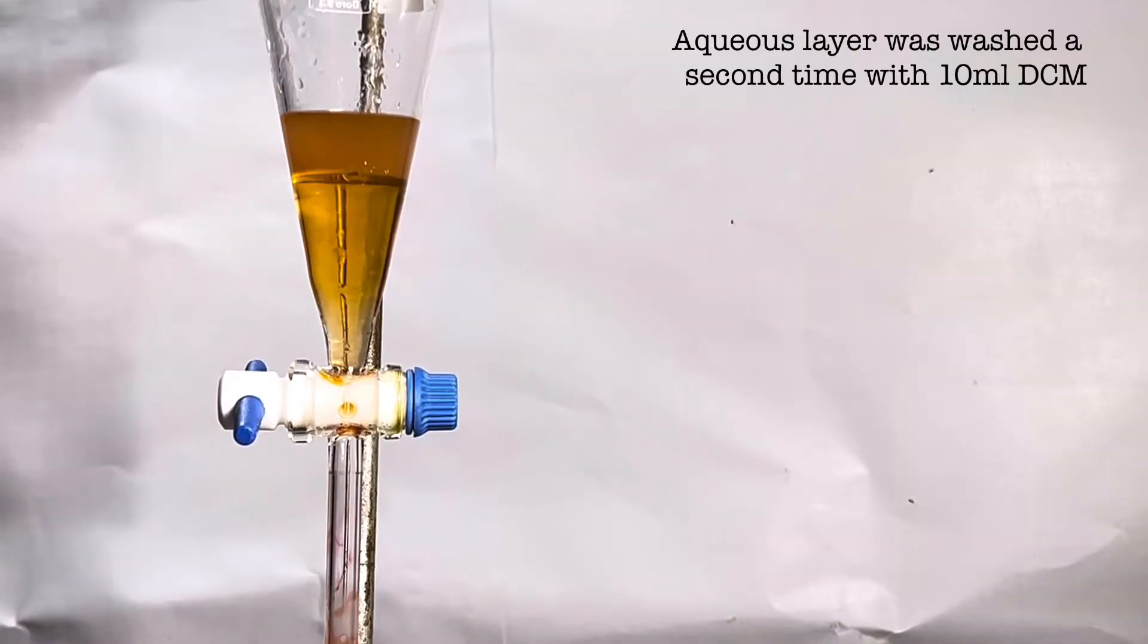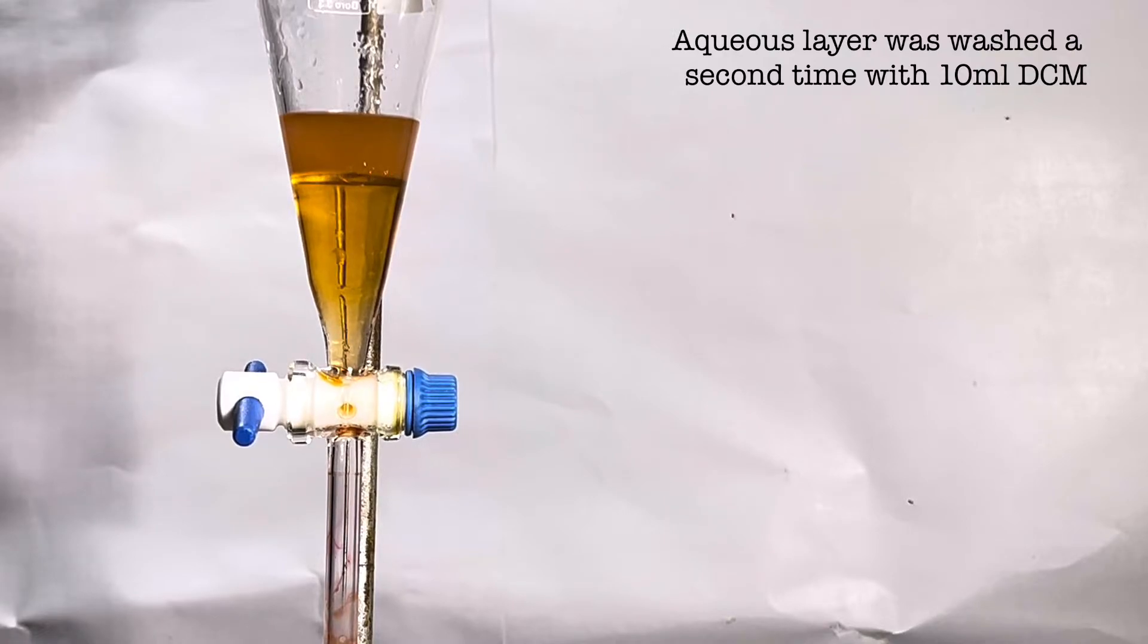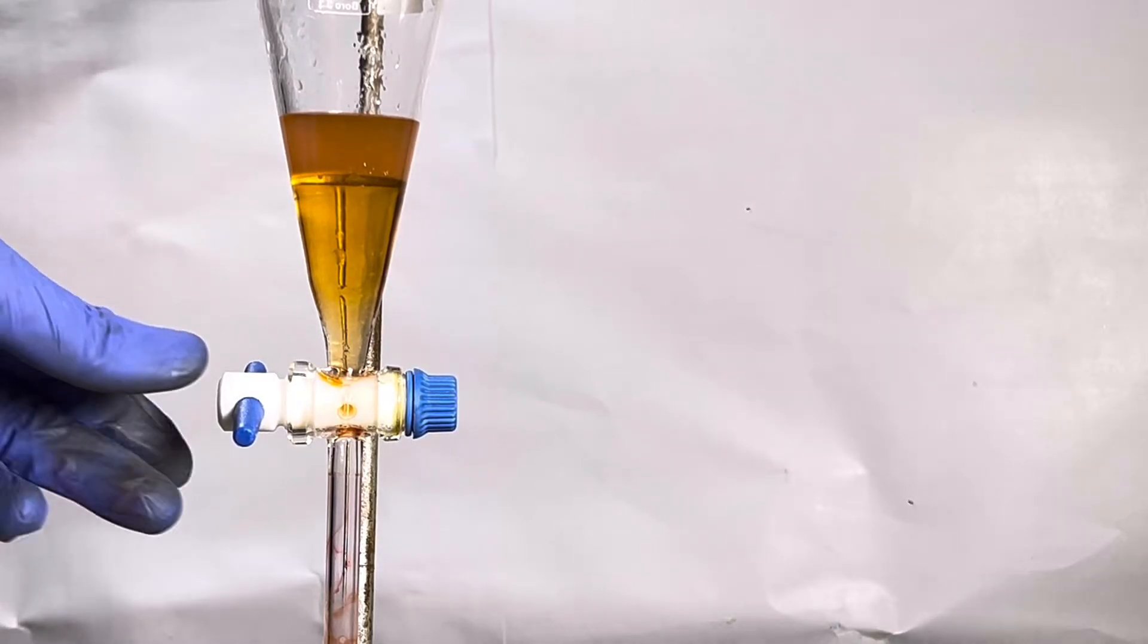Before discarding the upper aqueous layer, it was washed again with 10 ml of dichloromethane to extract out any remaining phenolphthalein. The color of the dichloromethane layer is not as dark compared to the previous extract indicating less phenolphthalein in this extract. The dichloromethane layer was drained into the previous organic layer.